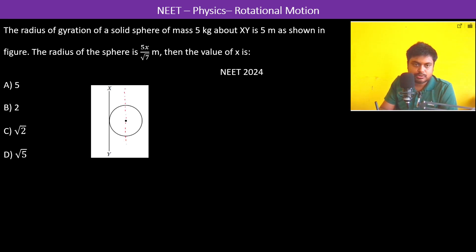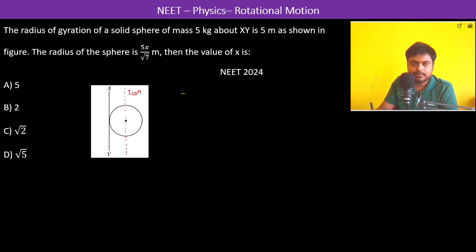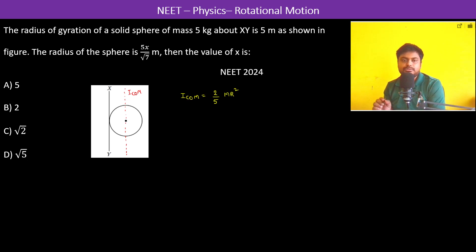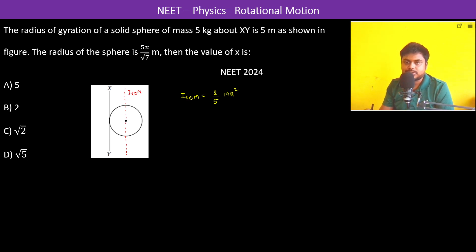This axis is passing through the center of mass. We write I_cm — the moment of inertia through the center of mass — which for a solid sphere is 2/5 mr². Now since we have to calculate the moment of inertia about XY...